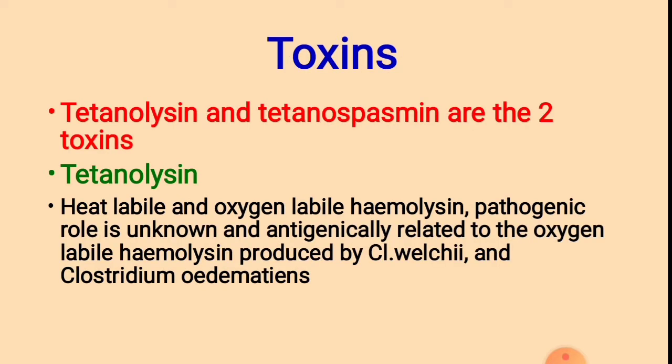Toxins: Tetanolysin and tetanospasmin are the two main types of toxins produced by Clostridium tetani. Tetanolysin is a heat-labile and oxygen-labile hemolysin, meaning it causes lysis of red blood cells. Its pathogenic role is unknown, and antigenically it is related to the oxygen-labile hemolysin produced by Clostridium welchii and Clostridium oedematiens.